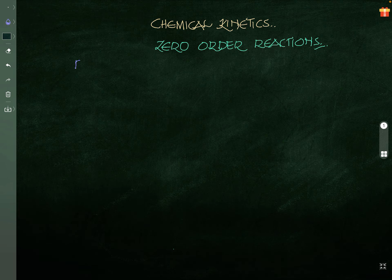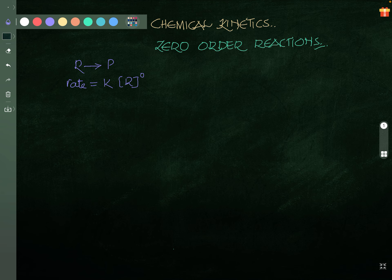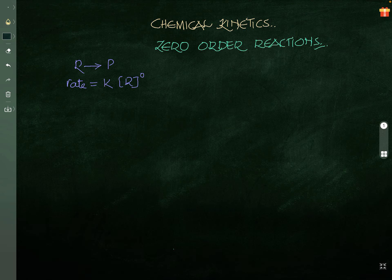What do you mean by zero-order reaction? How to get zero-order reaction? Very simple. If R gives rise to P, that means reactants are converted to products. Then, if you are writing the reaction as rate equals K into R to the power 0, that means the rate is not depending on the concentration of reactants. That is called zero-order reaction.